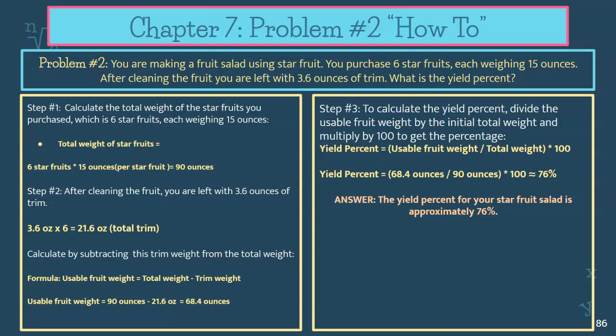First, calculate the total weight of the star fruits you've purchased — that gives you your APQ. Six star fruits, each weighing 50 ounces: six times 15 gives you a total of 90 ounces of APQ — that goes on the bottom. After cleaning the fruit, you're left with 3.6 ounces of trim per fruit from all six. So you take 3.6 ounces times six, and that gives you 21.6 total ounces of trim.